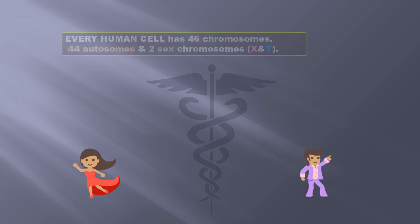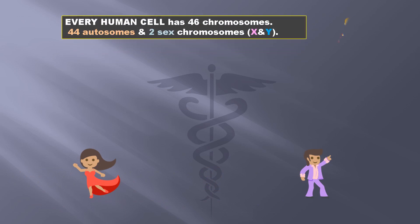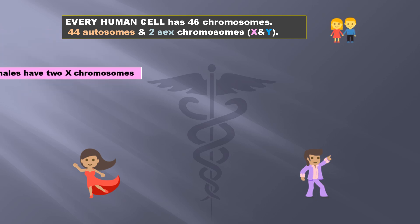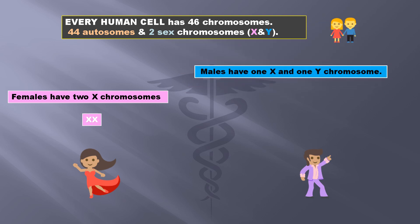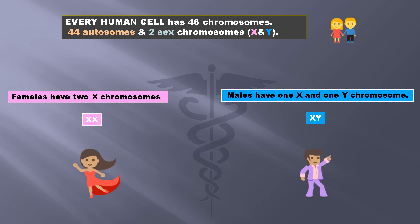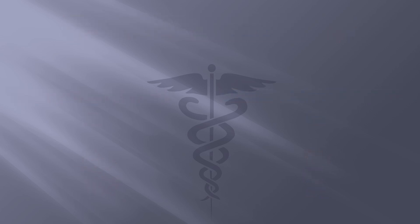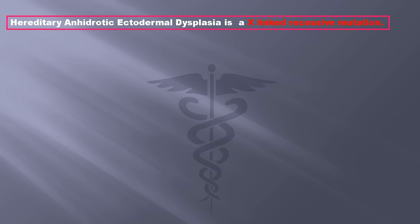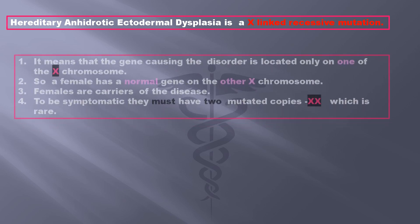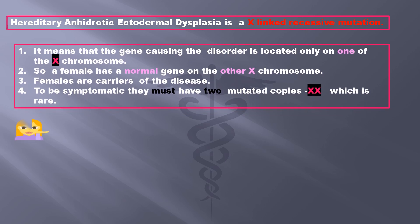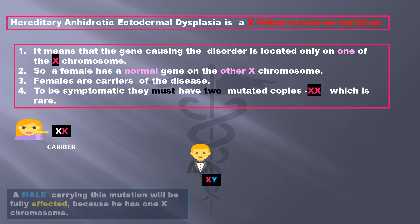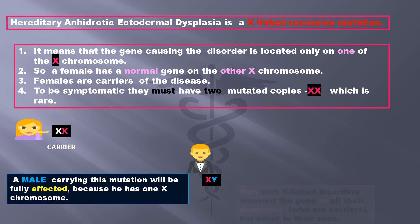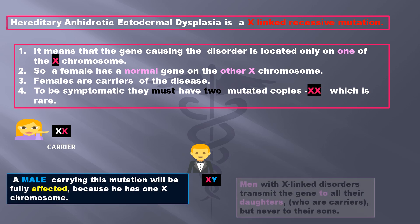So how does this disease occur? Every human cell has 46 chromosomes — 44 are autosomes and there are two sex chromosomes, X and Y. Females have two X chromosomes and males have one X and one Y chromosome. Hereditary anhydrotic ectodermal dysplasia is caused by X-linked recessive mutation. It means that the gene causing the disorder is located only on one of the X chromosomes. So a female has a normal gene on the other X chromosome. Females are carriers of the disease, and to be symptomatic they must have two mutated copies of the X chromosome, which is rare.